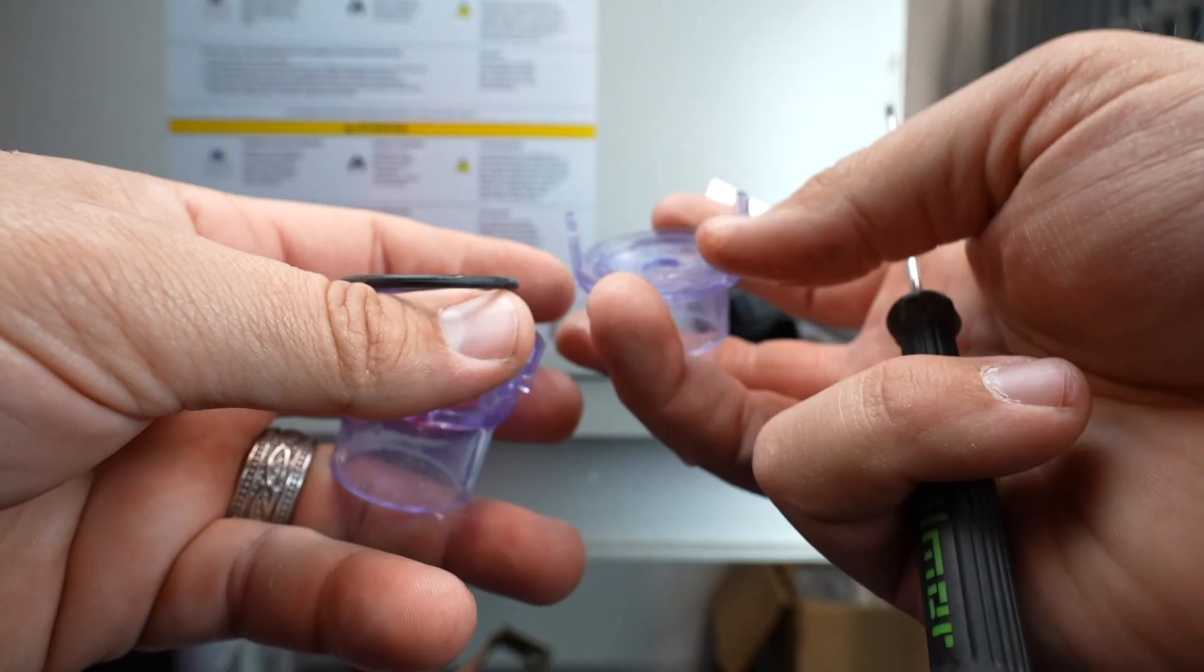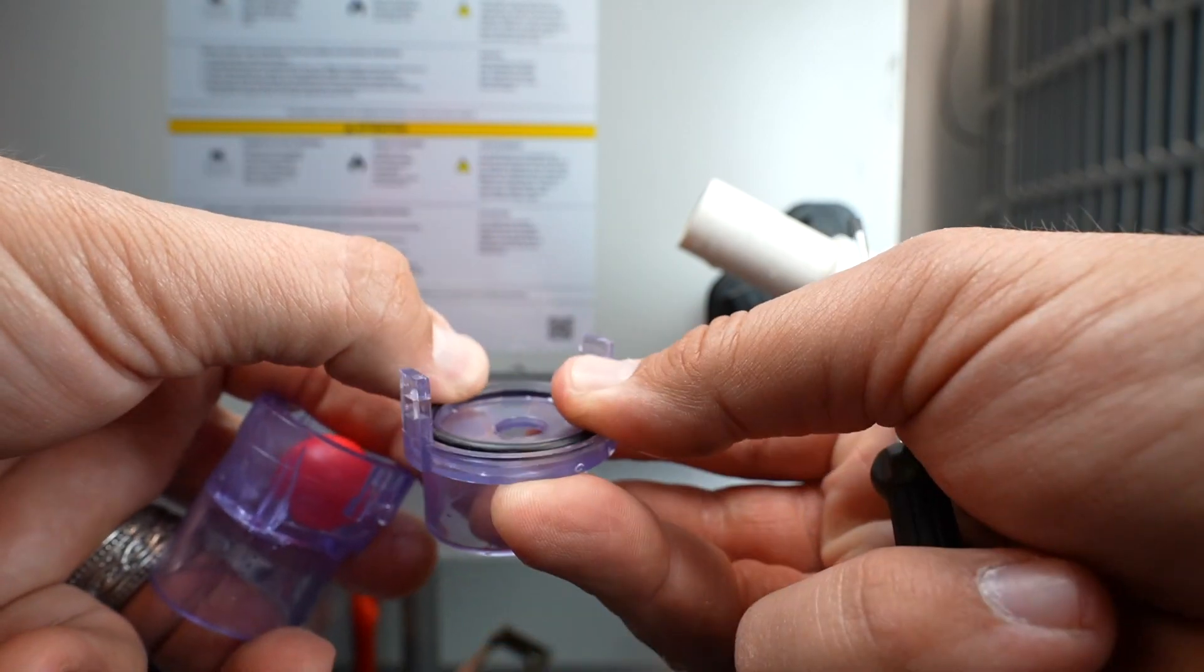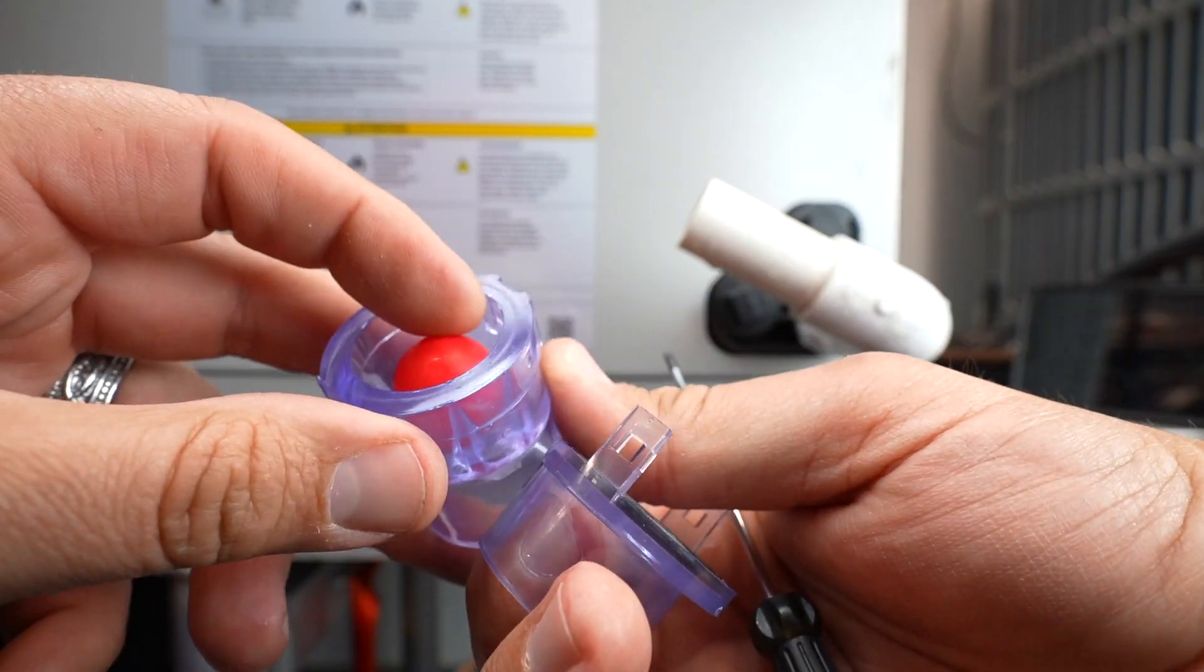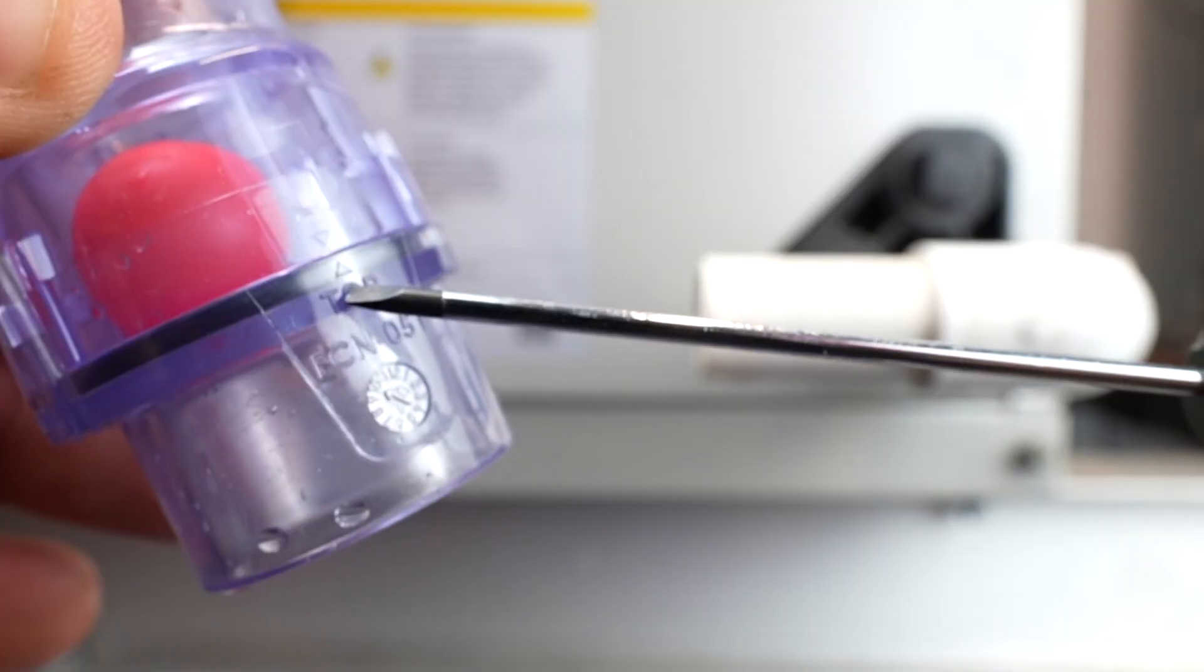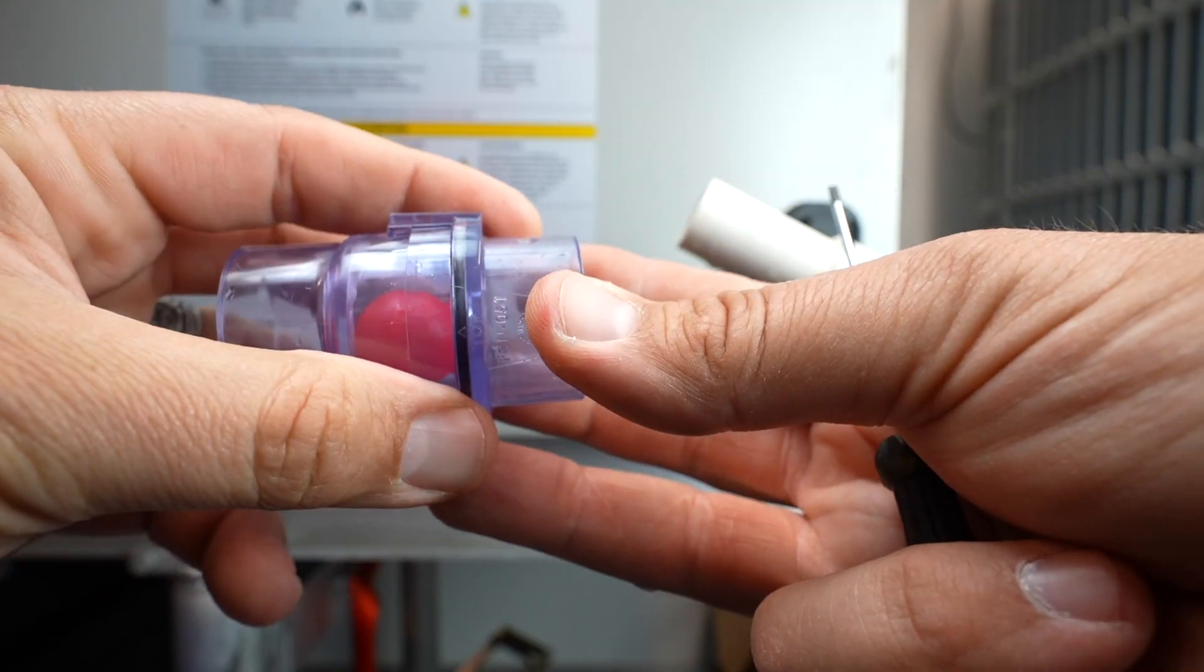When inspection and cleaning are complete, reassemble by installing the O-Ring in the groove. Make sure the ball valve is positioned properly, line up the side tabs, verify the arrows on top are lined up, clip together, and you're all done.